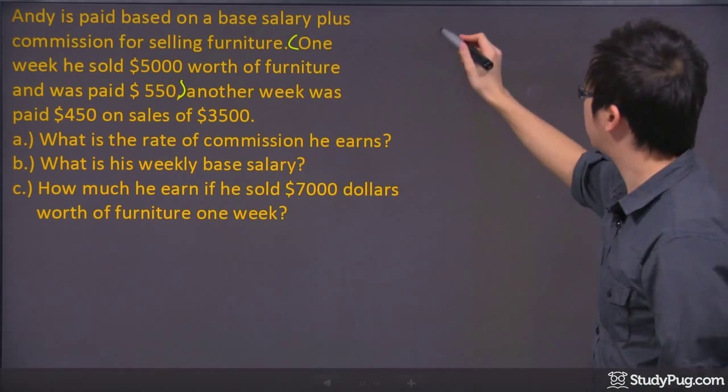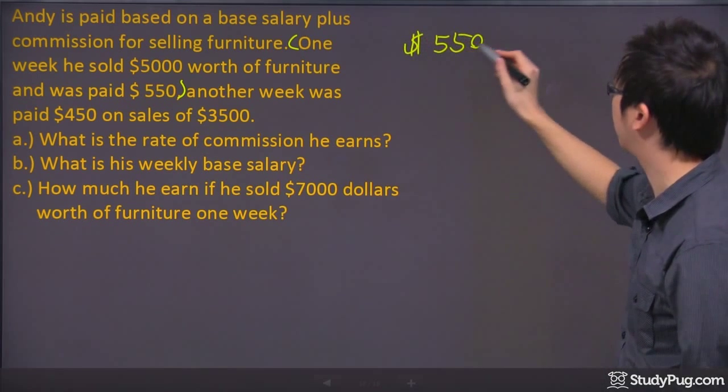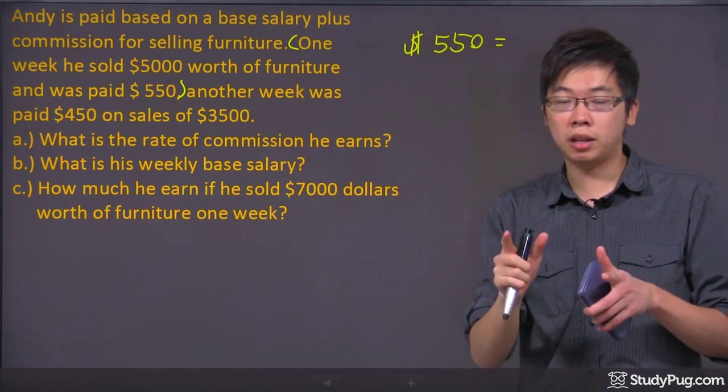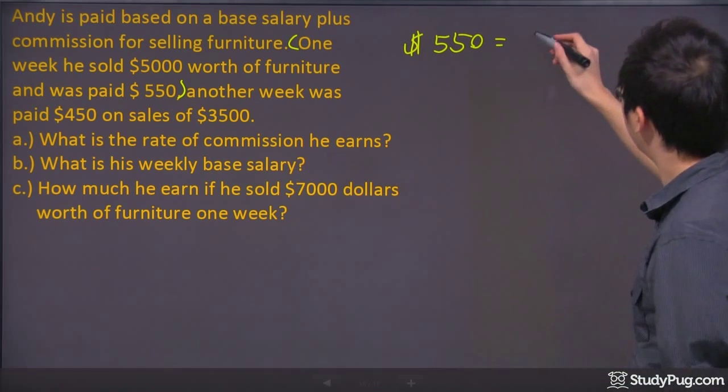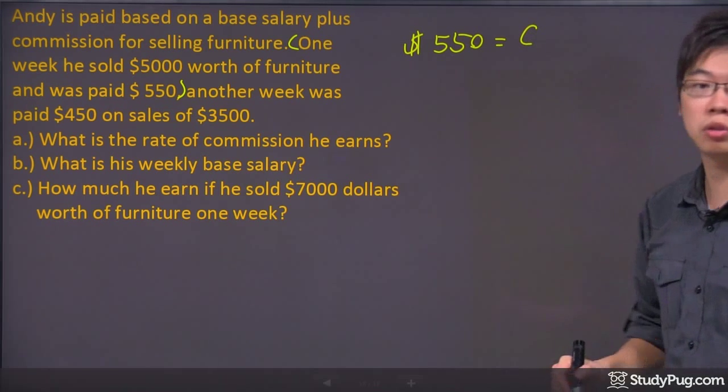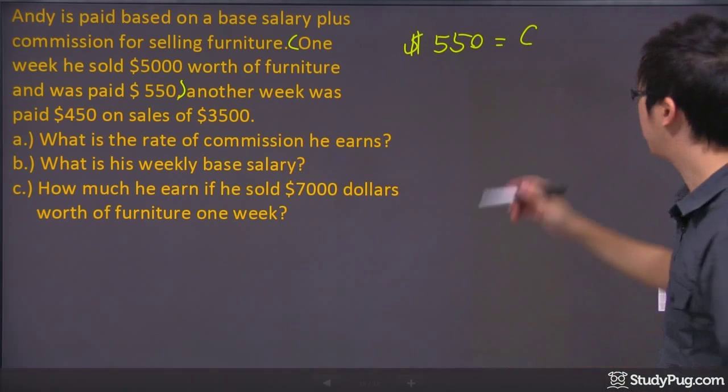What happened is he was paid $550. That is how much money he earned. But we know that the money that he earns is based on the commission plus the base salary. We don't know how much the commission is, so let's use C for that.